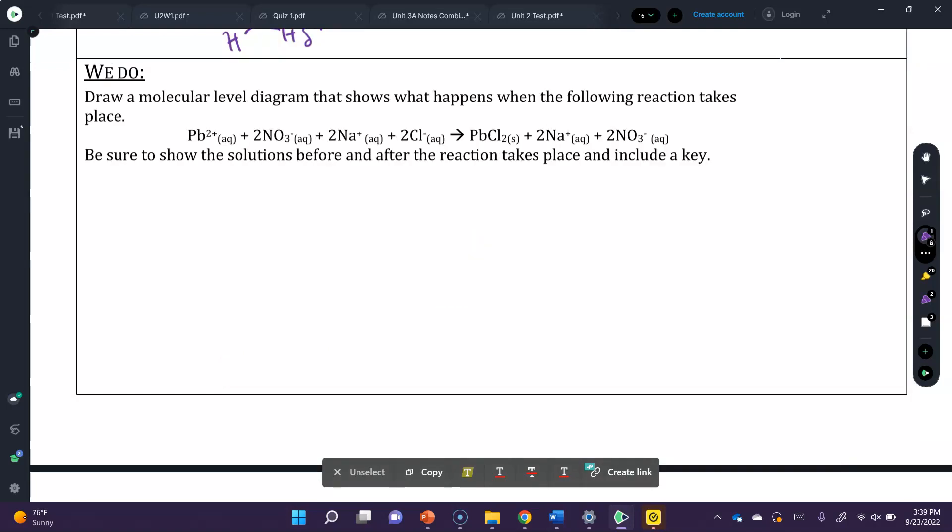For the we do, draw a molecular-level diagram that shows what happens when the following reaction takes place. Be sure to show the solutions before and after the reaction takes place and include a key. One of the things I want you to make sure you use is that this is water, and that's pretty much my key. We are going to look at these and see that we need particles for those. The easiest way is to just draw it and label it. And then from there, you are going to draw these hydration shells. So pause the video, and I want you to attempt to draw these.